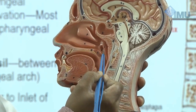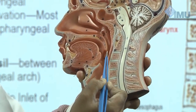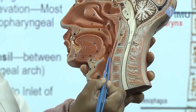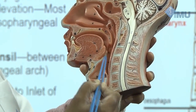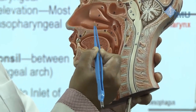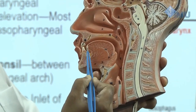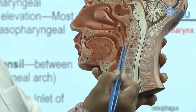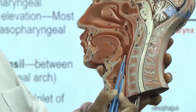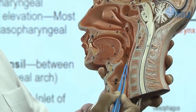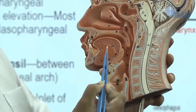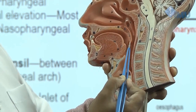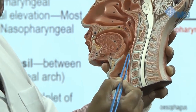You can see the opening of the auditory tube here. Then comes the oropharynx, which is between the soft palate and uvula to the epiglottis. The oropharynx is the part of the pharynx that deals with both the air coming through the nasopharynx as well as food coming through the oral cavity. Clinically, the most important part — where admixture of both tracts can happen — is the oropharynx.